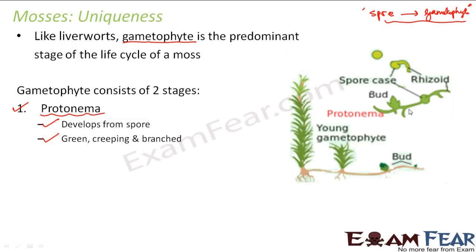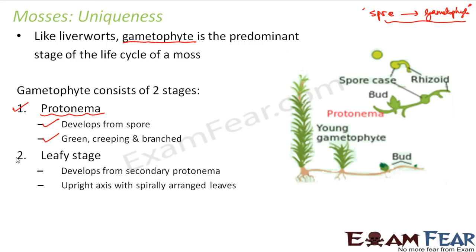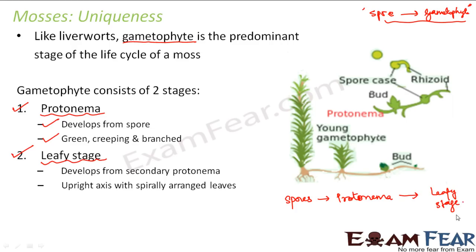Here you can see the structure — this is the rhizoid, and this is the spore case. The second stage is the leafy stage. The leafy stage will develop from the secondary protonema. So from protonema, the leafy stage develops — an upright axis with spirally arranged leaves. In liverworts, spores germinate directly to form gametophyte with no intermediate stage. But in mosses, spores form protonema, and then protonema forms the leafy stage, which is the final gametophyte.